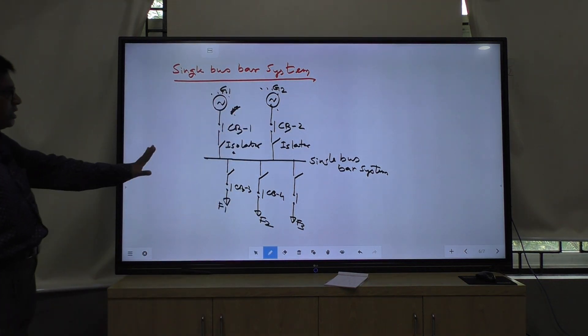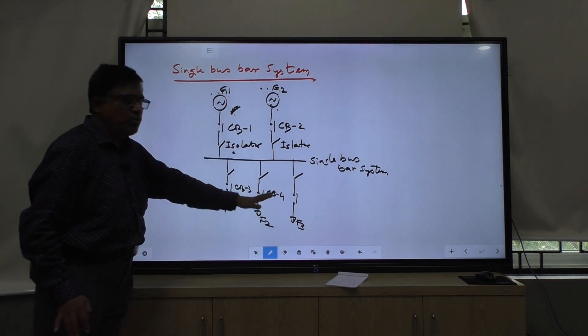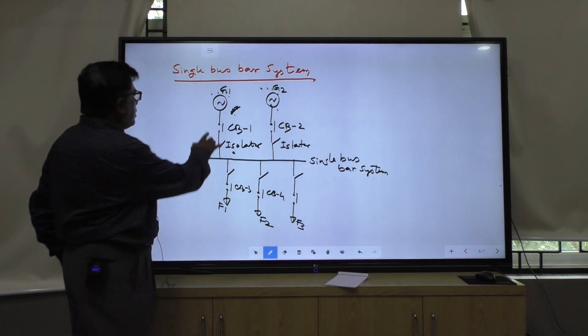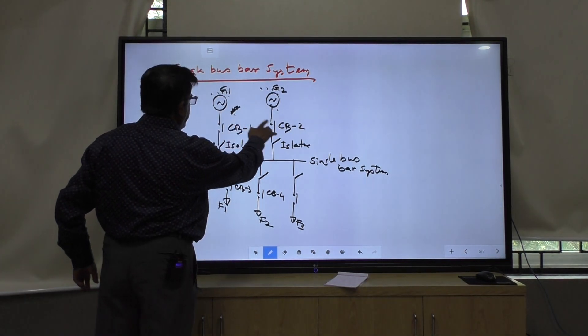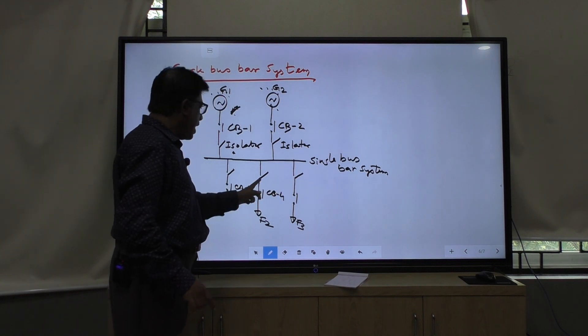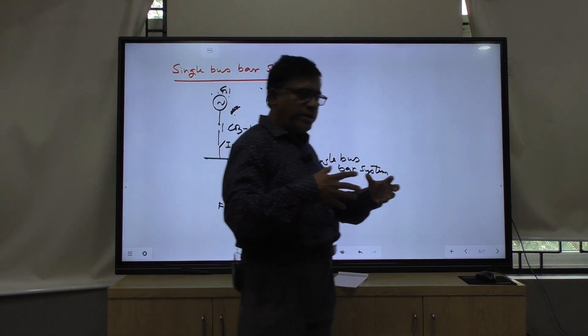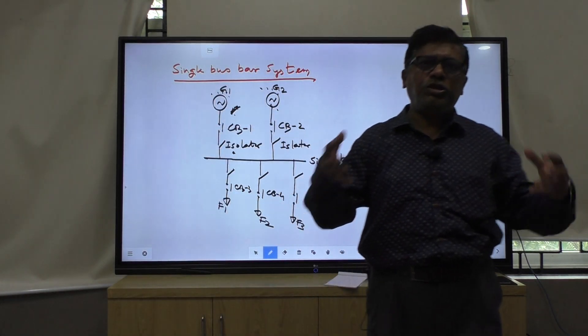So this is the example of single bus bar system. It is the incoming feeder. Both the feeders are connected at 11 KV. Outgoing feeder. These three feeders are connected at 11 KV. Common voltage. Common point to be found.